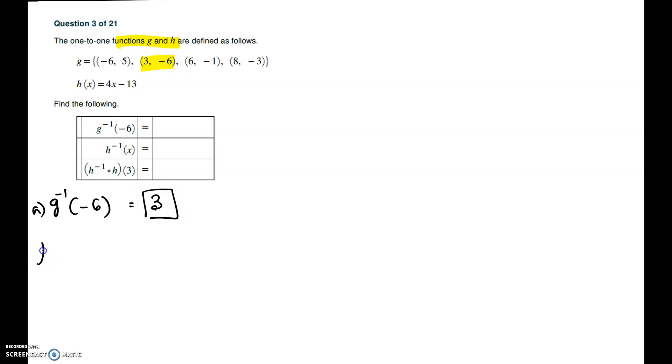For the second part, we have to find h inverse of x. We are given h(x) = 4x - 13. We have a few steps here. We will first change h(x) to y, so y = 4x - 13. That is step 1. We are rewriting h(x) as y.